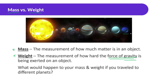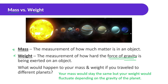So what would happen to your mass and weight if you traveled to different planets? Your mass would stay the same because the amount of stuff, even if you went to other places, would be the same. But your weight would fluctuate depending on the gravity of the planet. And if you went into space where there's essentially no gravity, you'd be weightless — but you wouldn't be massless, you'd still have stuff inside of you.